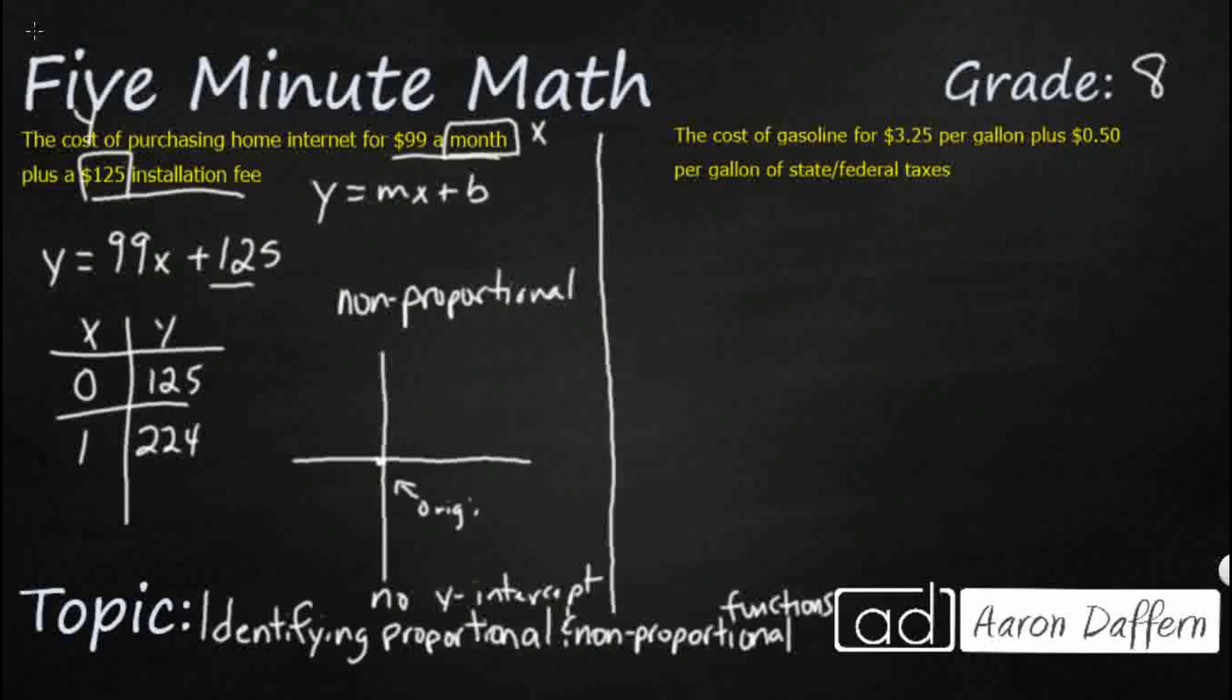And if we want to have proportional relationships, it needs to go through there, but it's actually going to start up here at about this $125, kind of move up that way with a slope of $99. So we could tell this is non-proportional simply because it has a y-intercept. It does not go through the origin.